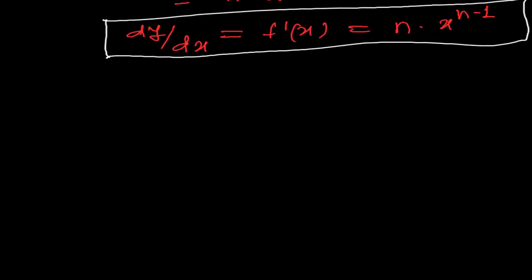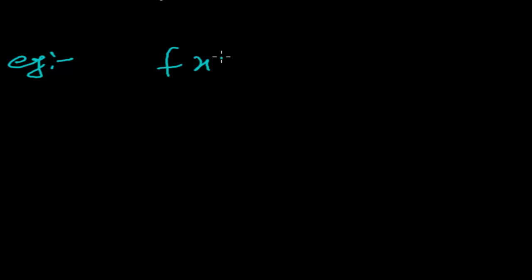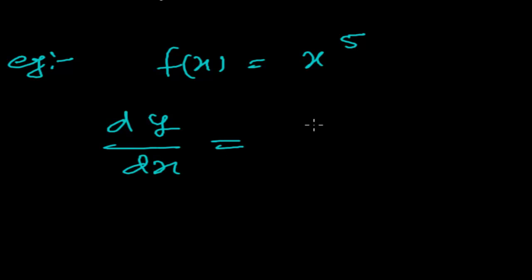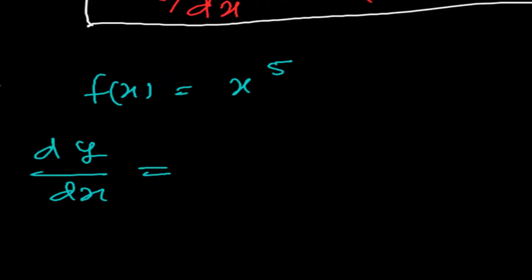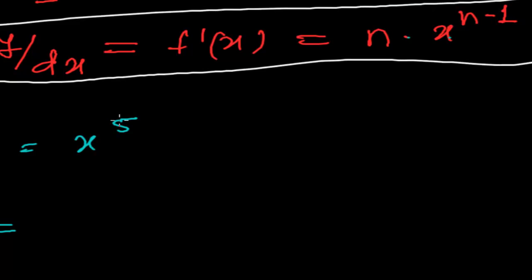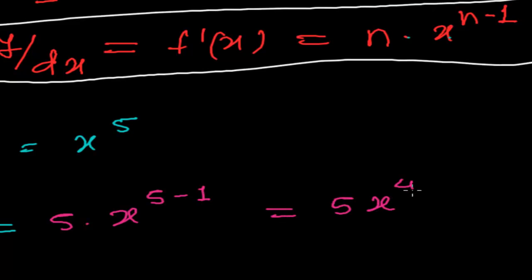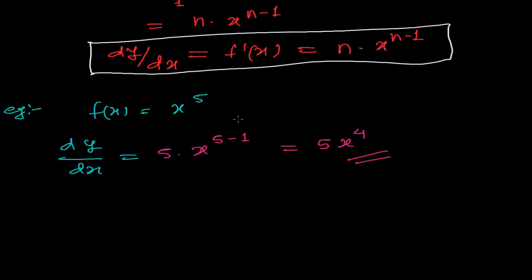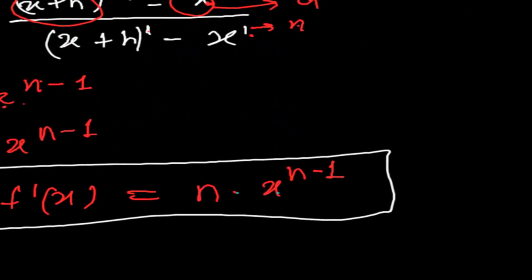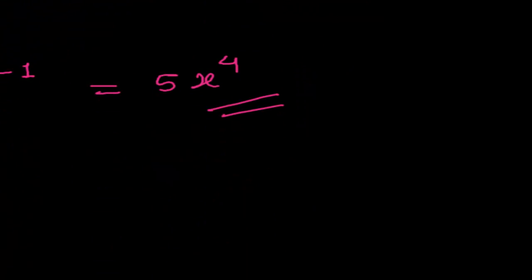Let me give a simple example. Suppose f(x) = x^5. To find the derivative, we simply apply the formula: n times x to the power n minus 1. Here n equals 5, so the derivative is 5 times x to the power 5 minus 1, which is 5x^4. We don't have to go through the long first-principle method; we can directly state the derivative of any such function.